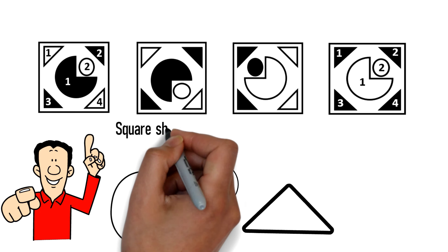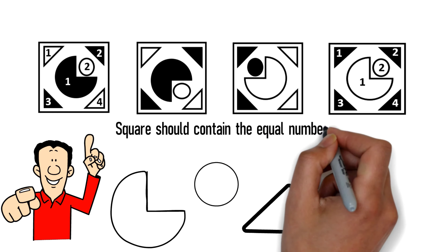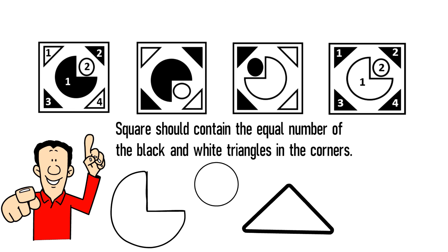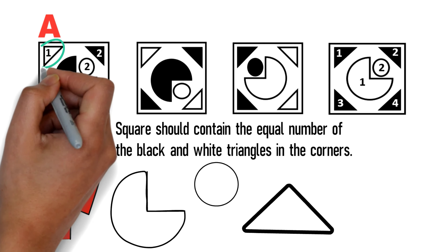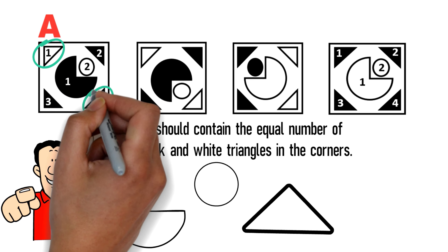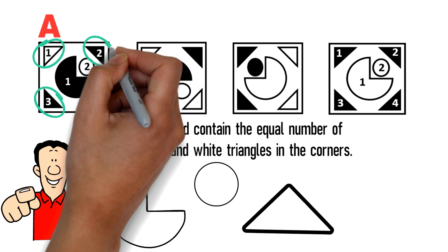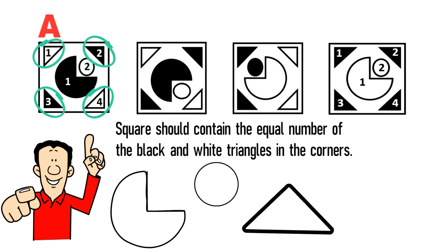There are some sophisticated questions on the test which might include patterns for both shapes. In this case, the pattern is that each square should contain an equal number of black and white triangles in the corners, positioned diagonally across from each other. White triangles are in the upper left and bottom right corners, black triangles are in the bottom left and upper right corners — and this same pattern exists in shapes A, B, and C.